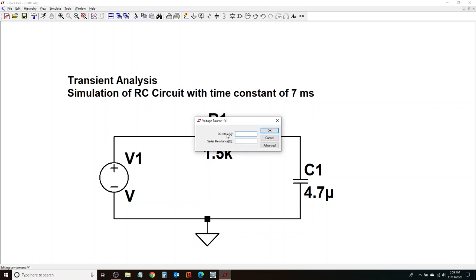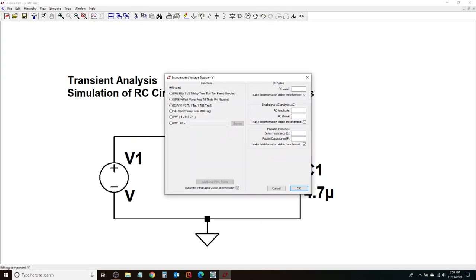And as soon as I right-click, it gives me an option to set its DC value and the series resistance. I need this to be an AC source. So I'm not going to enter anything over here. Instead, I'll click on Advanced.